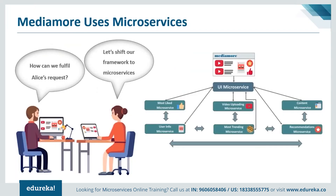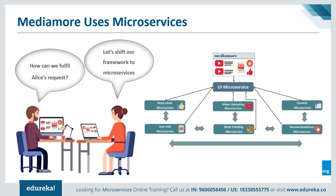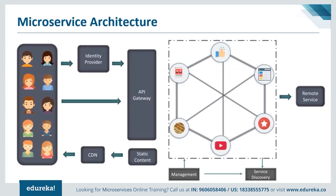To fulfill Alice's request, developers of MediaMore decided to shift their application from a monolithic architecture to microservices. Before getting into how developers shift their monolithic framework into microservices, let me brief you about the different parts of microservice architecture. The architecture consists of various users who send requests from various devices. These requests are authenticated by the identity provider and passed on to the API Gateway.